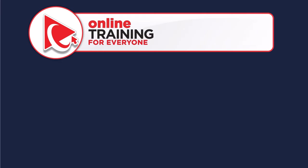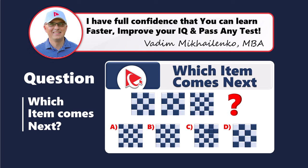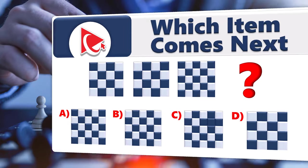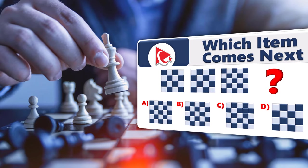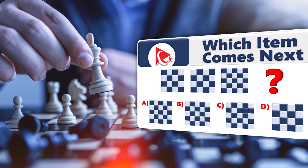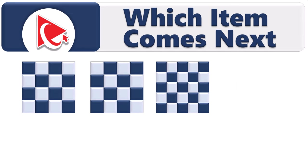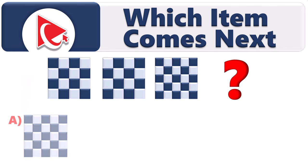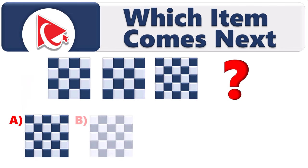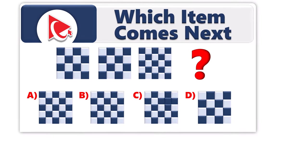Let's dive into an amazing cognitive assessment test question that not only enhances your analytical abilities, but also improves your problem-solving skills you can apply to real-life problems. You're presented with three squares, and you need to determine which square comes next, selecting from choices A, B, C, and D.